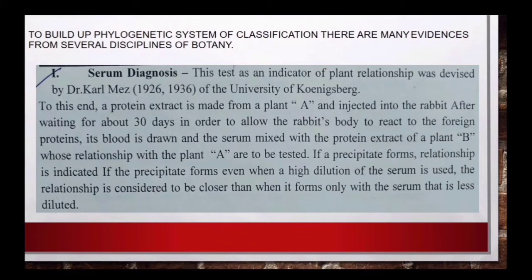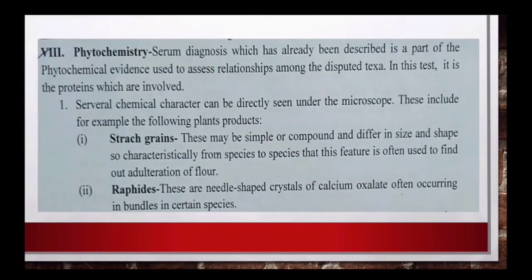Serum को plant B में मिलाया गया और precipitate बन जाता है, तो यह plant A और B के बीच relationship शो करता है। जैसे-जैसे serum को dilute करते जाते हैं, फिर भी अगर precipitate बनता है, इसका मतलब है कि उन दोनों plants के बीच में बहुत अधिक relationship है - they are closely related। इस तरह से हमें पता चल जाता है कि उनके proteins आपस में मिलते-जुलते हैं।